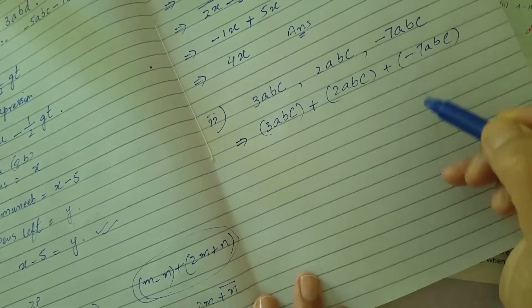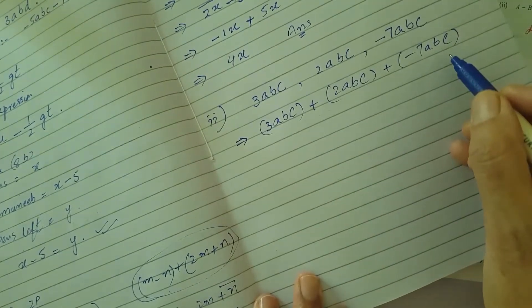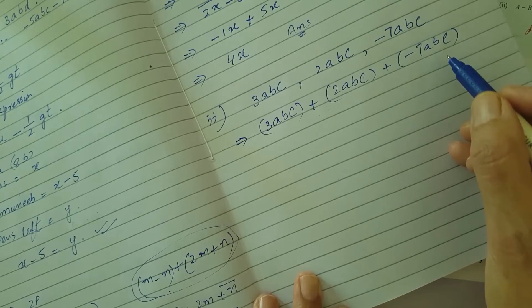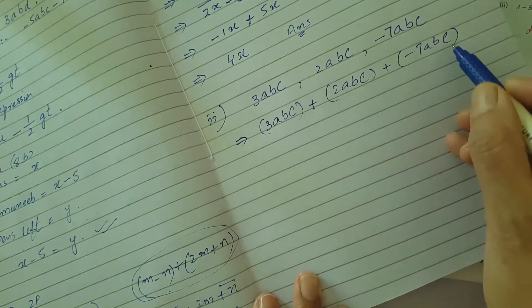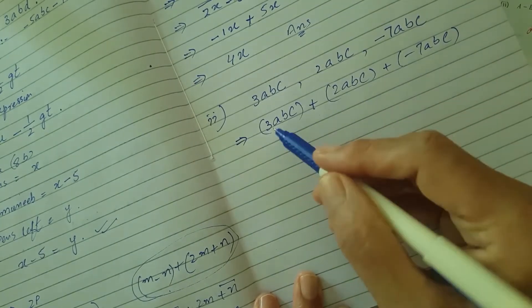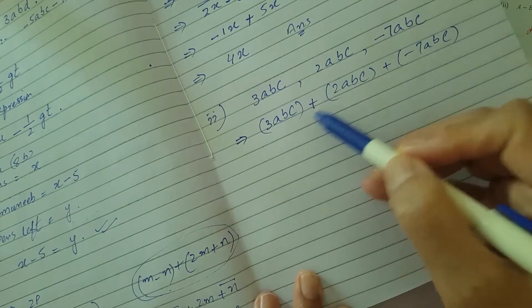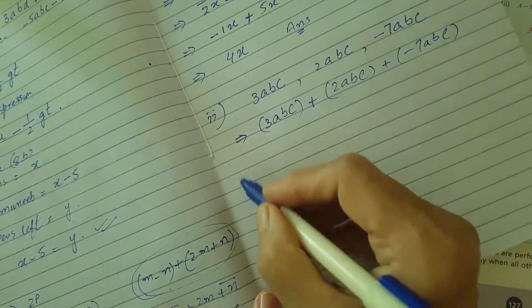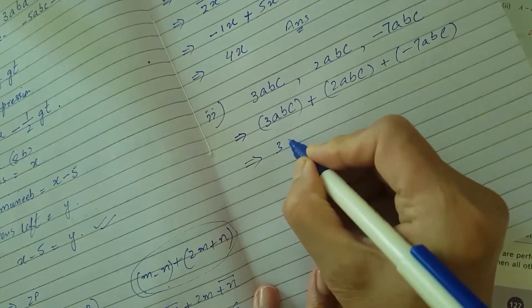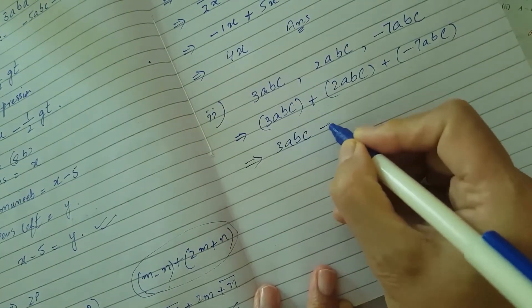You have to add all three expressions having single terms. Now all terms are the same - they have the same variable, so they are like terms: ABC, ABC, and ABC. So we can add them easily.